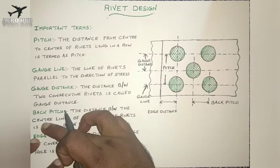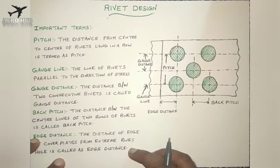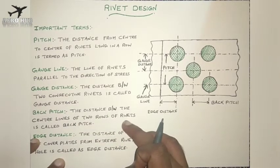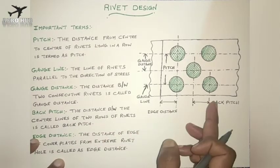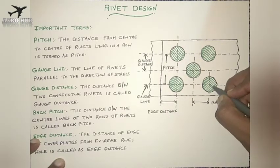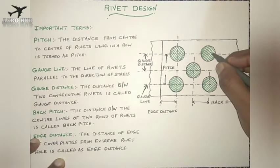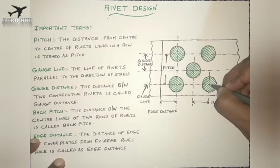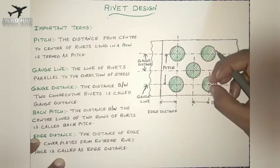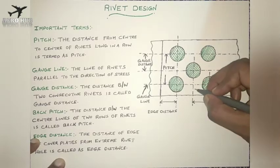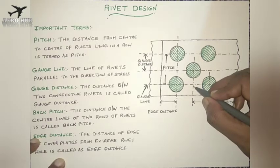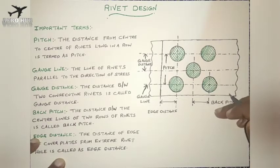The next term is back pitch. This is nothing but the distance between the center lines of two rows of rivets, which is called back pitch. I have indicated here — this is one row of rivet and this is another row of rivet — and the distance between the centers of two rows of rivets is called back pitch.